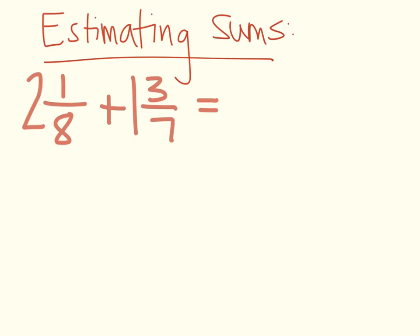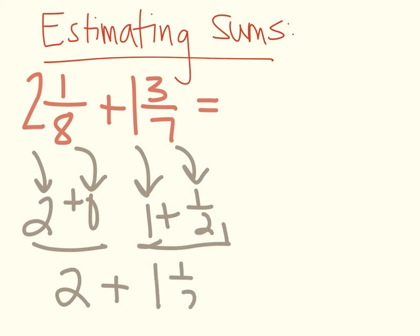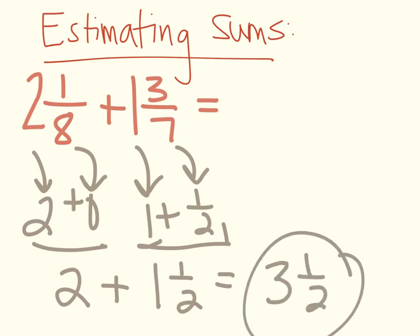We can do the same thing with mixed numbers. We bring our 2 down, plus 1 eighth estimates to 0, so that part becomes 2. Then we look at 1 and 3 sevenths: 1 stays as 1, and 3 sevenths would be 1 half — add those together to get 1 and 1 half. So when we estimate our sum in this problem, we get 3 and 1 half as our estimated sum.